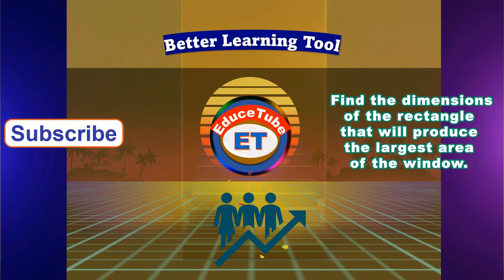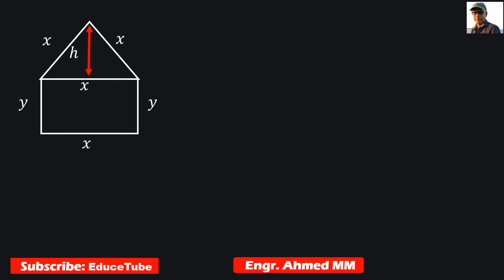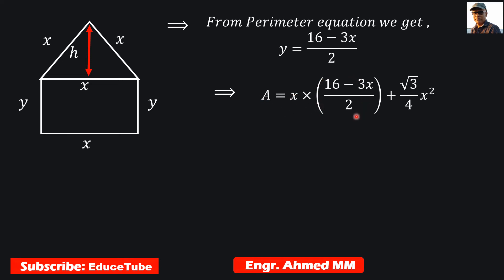From the perimeter equation we have to find y, then we will substitute this value in the area equation. It was y, and we put the value for y. So this is the equation for area.